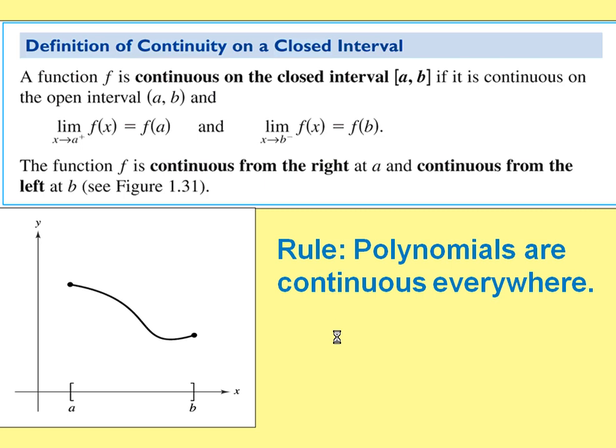A special rule to follow: polynomials are continuous everywhere. So when you're asked whether a polynomial is continuous and where, the answer is everywhere. The question then becomes: what is a polynomial? That's something you should make sure you know.